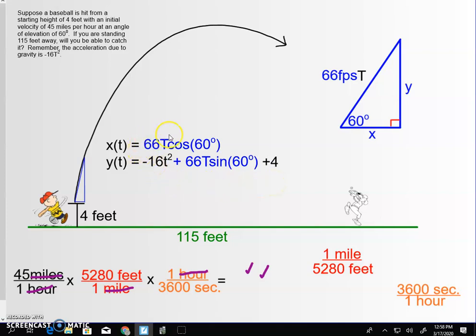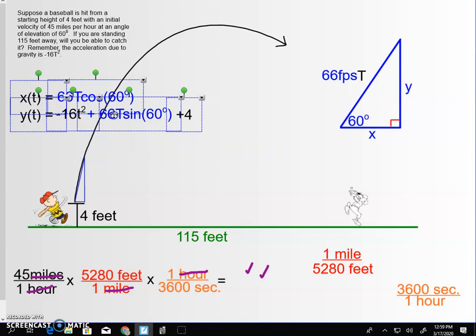Now, these are our two parametric functions and I'm going to use these to check to see how high the ball is when we're 115 feet away. So, let me grab these equations. I'm going to stick them right over here.